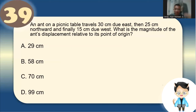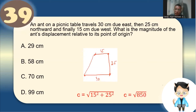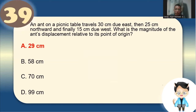Number 39: An ant travels 30 cm due east, then 25 cm northward, then returns due west. We need the magnitude of displacement using the Pythagorean theorem: c = √(15² + 25²) = √(225 + 625) = √850 ≈ 29 cm.